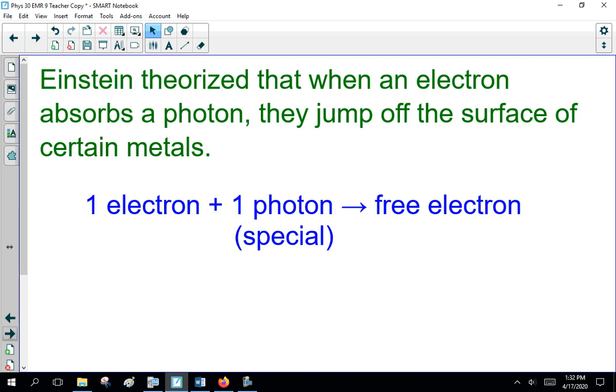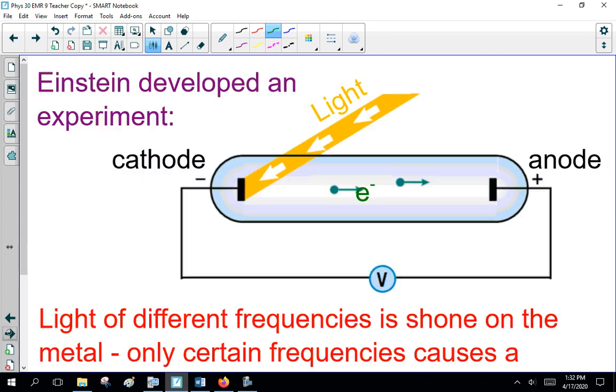Einstein theorized that when an electron absorbs a photon, they jump off the surface of certain metals. An electron plus a photon gives you a free electron. Two things here. One, this is a special photon of light, not any photon.